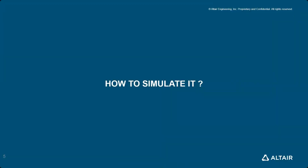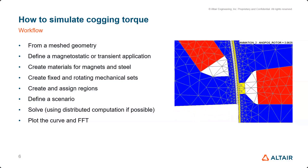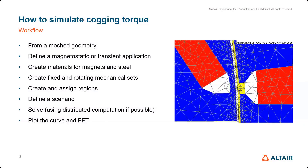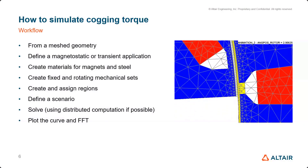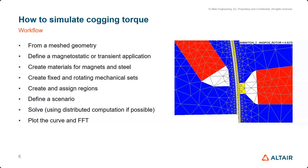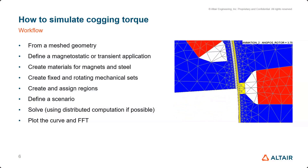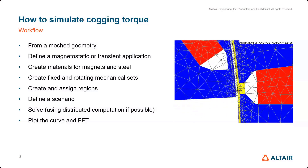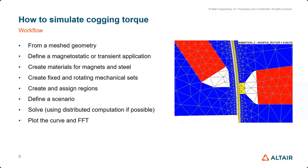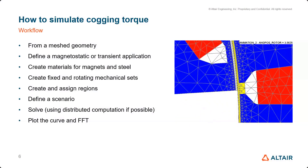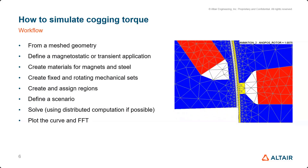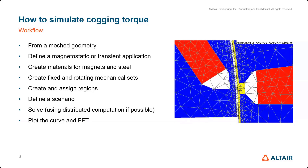How to simulate? Here is the workflow. First we start with the geometry, then mesh it, and we can use either the magnetostatic application or the transient application. Then we create materials, define motion (rotating and fixed), create regions and assign them to the respective region type, and define the scenario. For magnetostatic simulation, you can also use distributed computation since the solving steps are independent of each other. Then we plot the curve and perform FFT to determine the harmonics.